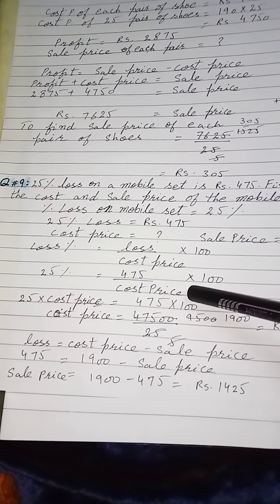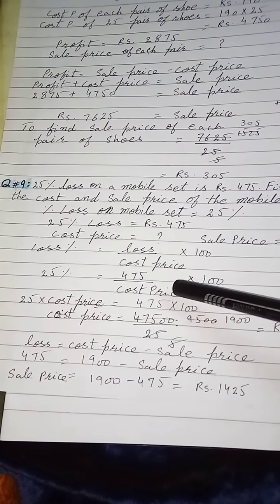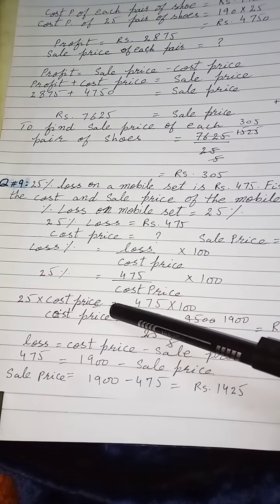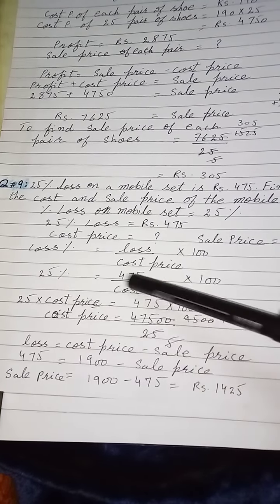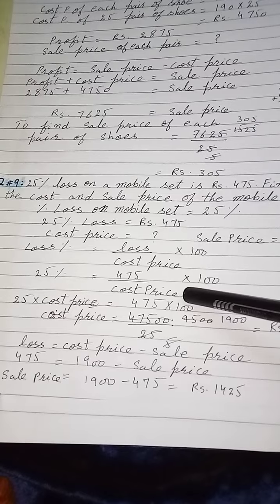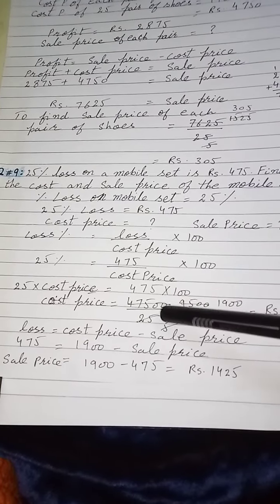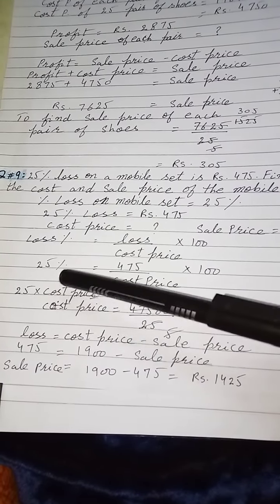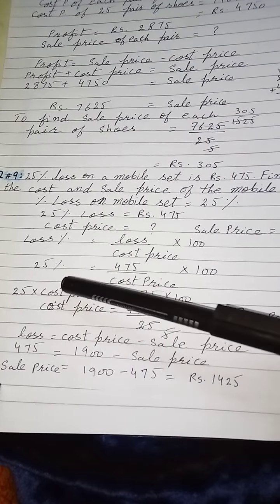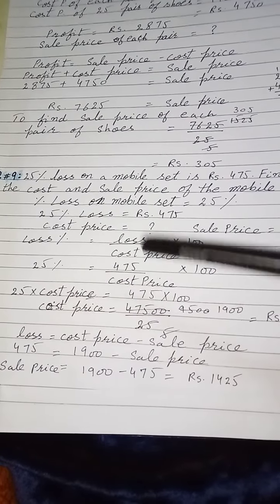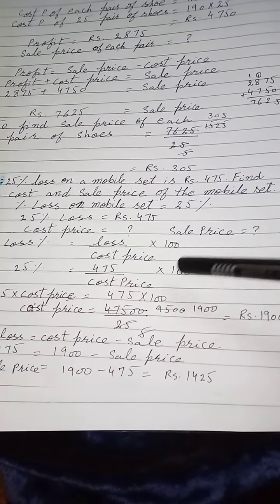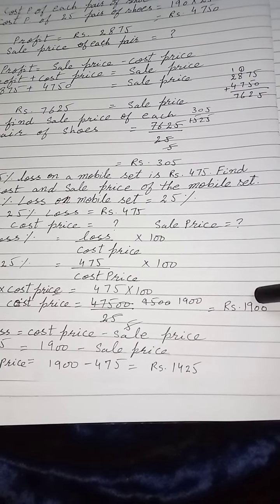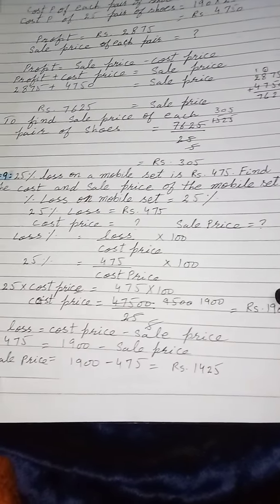Cost price جہاں ایک سائڈ پہ divide ہو رہی ہے دوسری سائڈ پہ جا کے multiplication میں change ہو جاتی ہے۔ Cost price کو دوسری سائڈ پہ لے گئے، 475 اور 100 multiply ہو کے 47,500 بن گیا۔ 25 یہاں لے کے آئیں گے تو divide ہوگا، cutting کر کے cost price rupees 1900 آ جائے گی۔